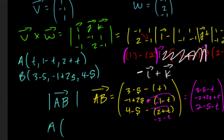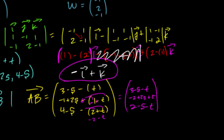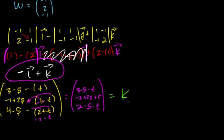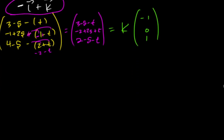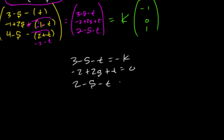Since AB is going to be parallel to our cross product (-1, 0, 1), we know that AB is equal to some constant k times (-1, 0, 1). From there we set up equations: (3 - s - t) = -k, (-2 + 2s + t) = 0, and (2 - s - t) = k.